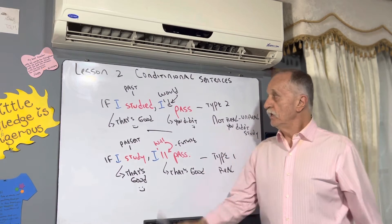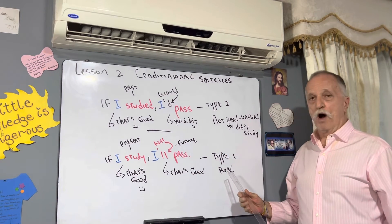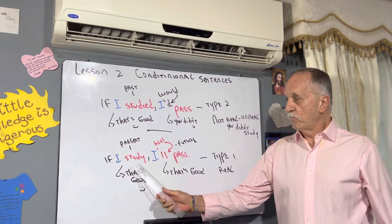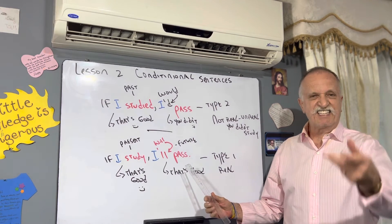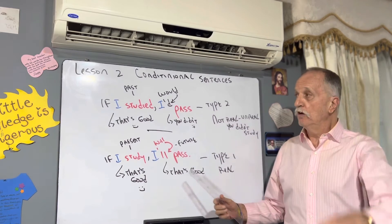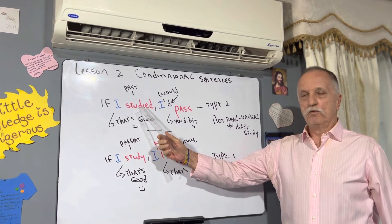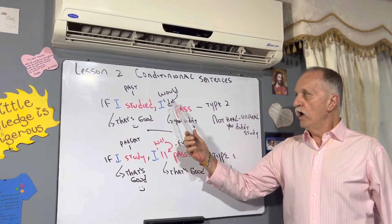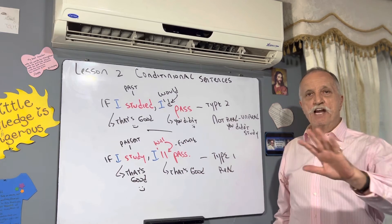Difference between type two and type one. Type one: simple present, will or won't, can if you want, with a verb. Type two: if with past verb, would with a verb. Type two, not real.